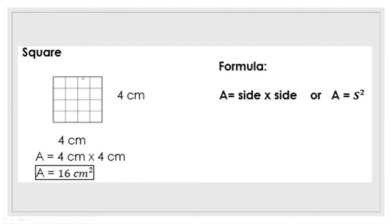We have here a square which measures 4 centimeters on each side. What we're going to do is multiply the side by the side. So A is equal to 4 centimeters times 4 centimeters, which is equal to 16 — and then we have the small 2 at the bottom.